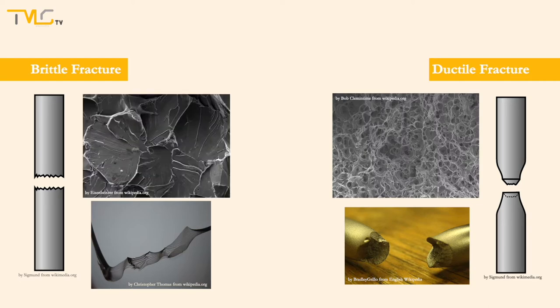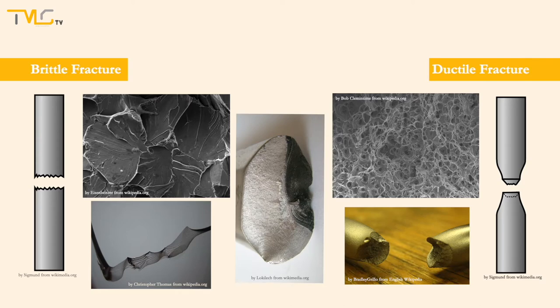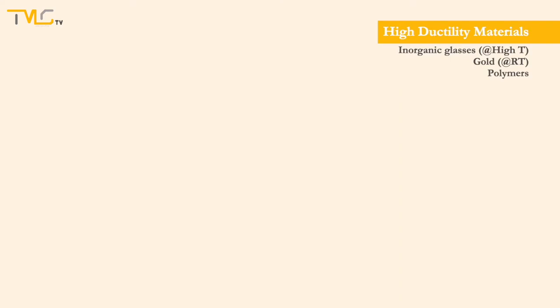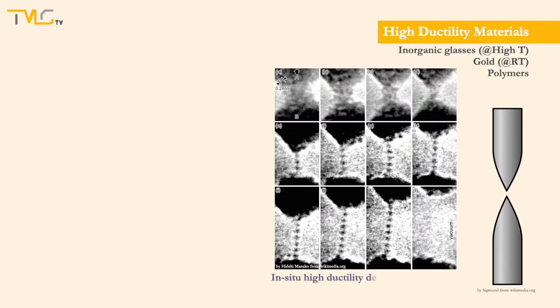A variety of fracture characteristics can be observed on fracture surfaces depending on the level of brittleness and ductility shown by the material. Materials with high ductility show a necking down to a single point during plastic deformation, which can be clearly seen at the fracture surface.